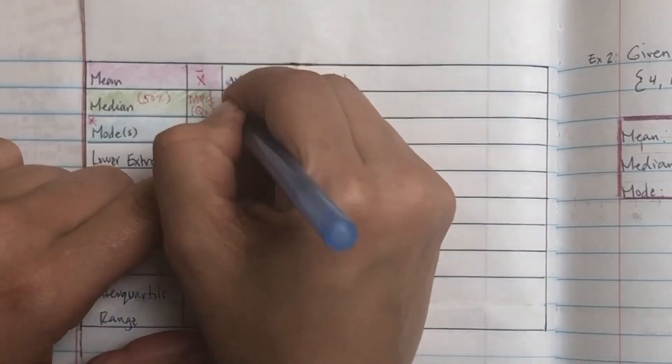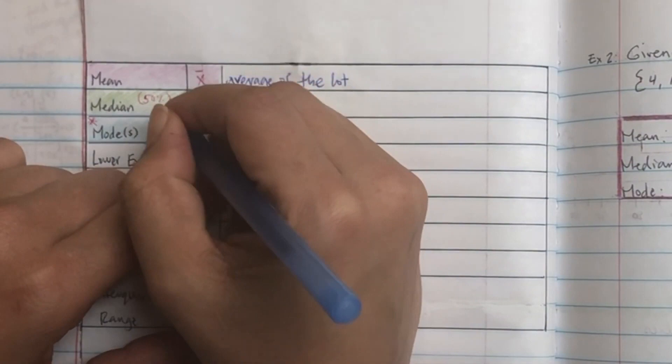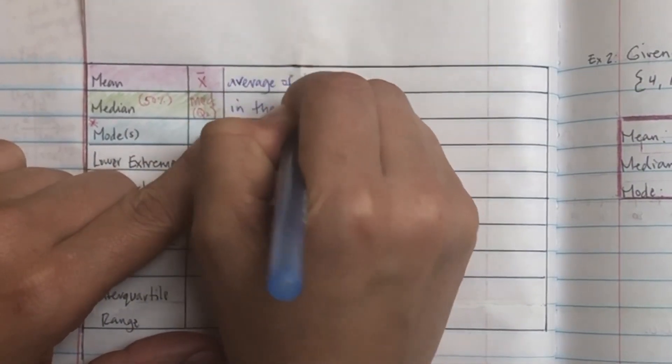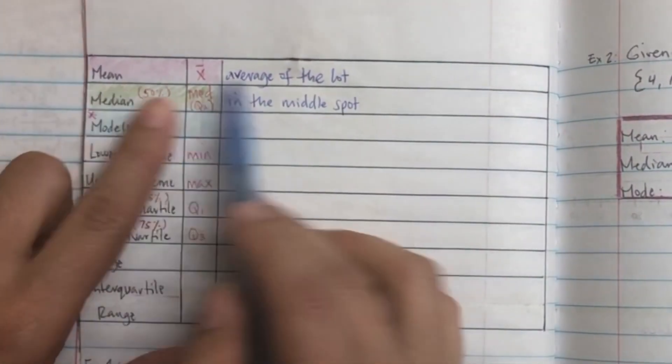So mean is the average of the lot, median is the one in the middle spot, and then mode is the one you see a lot.